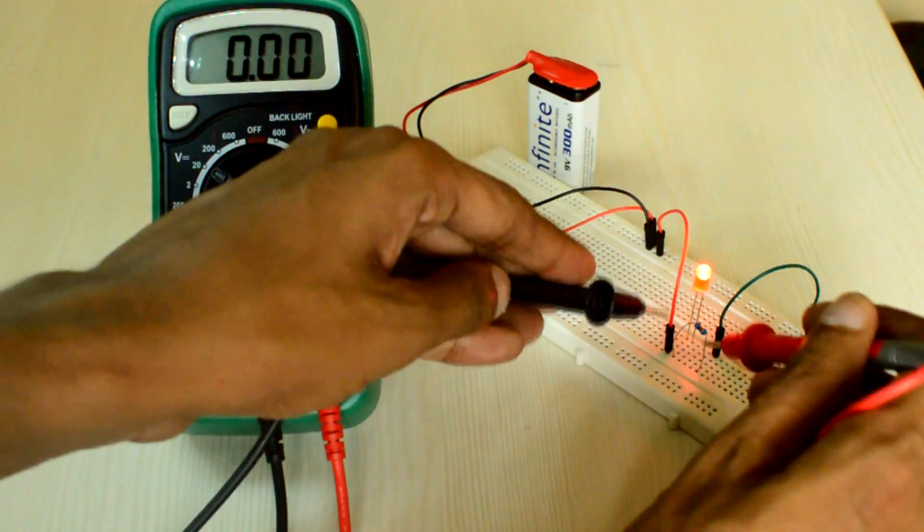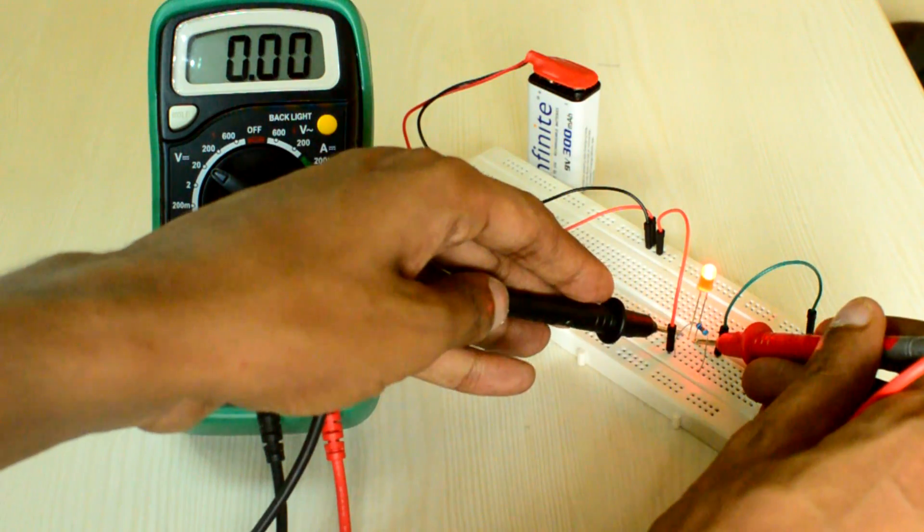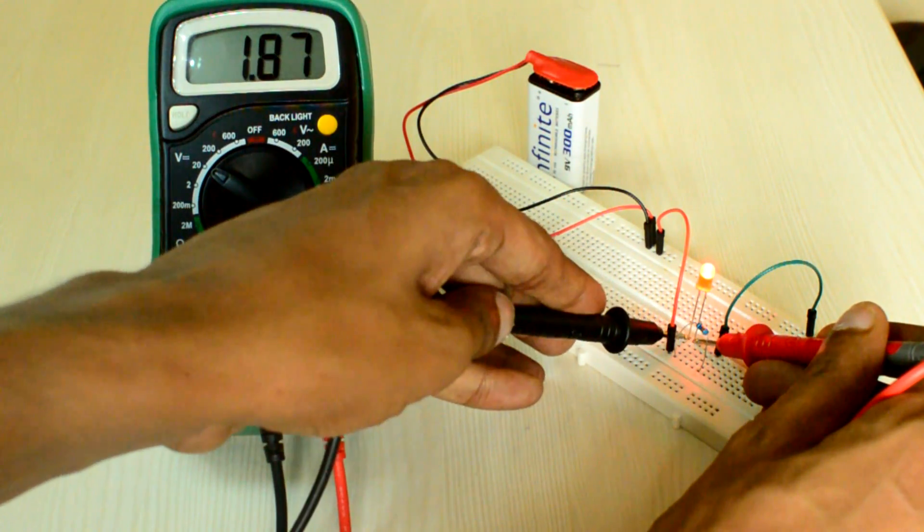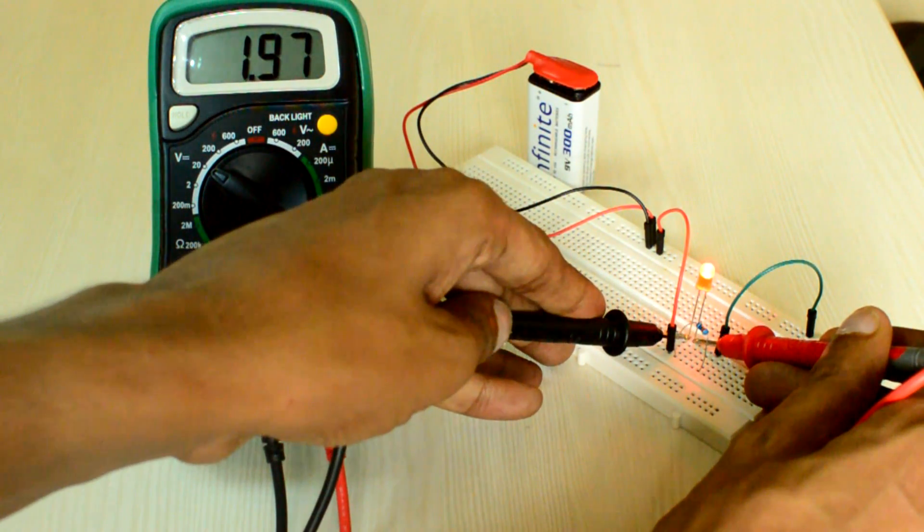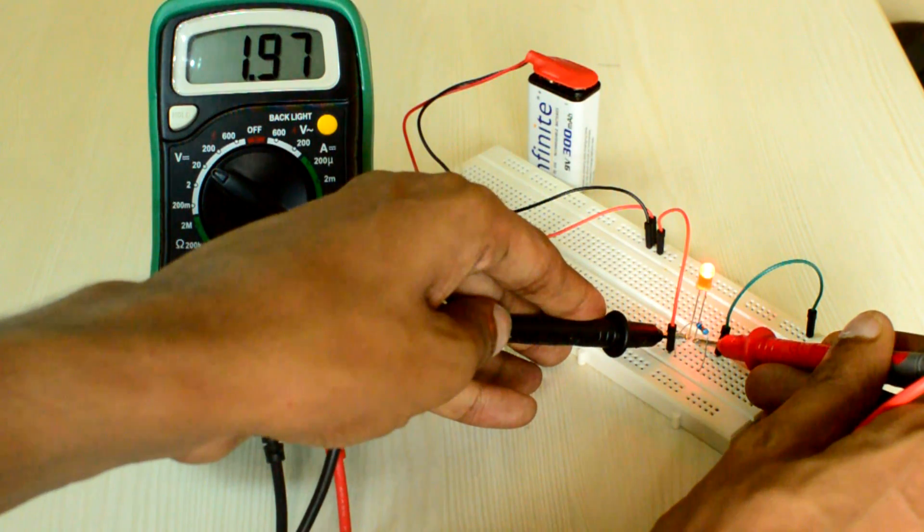Now let us measure the forward voltage of the LED. You can see the forward voltage is about 1.97V, pretty close to the theoretical value of 2.2V.